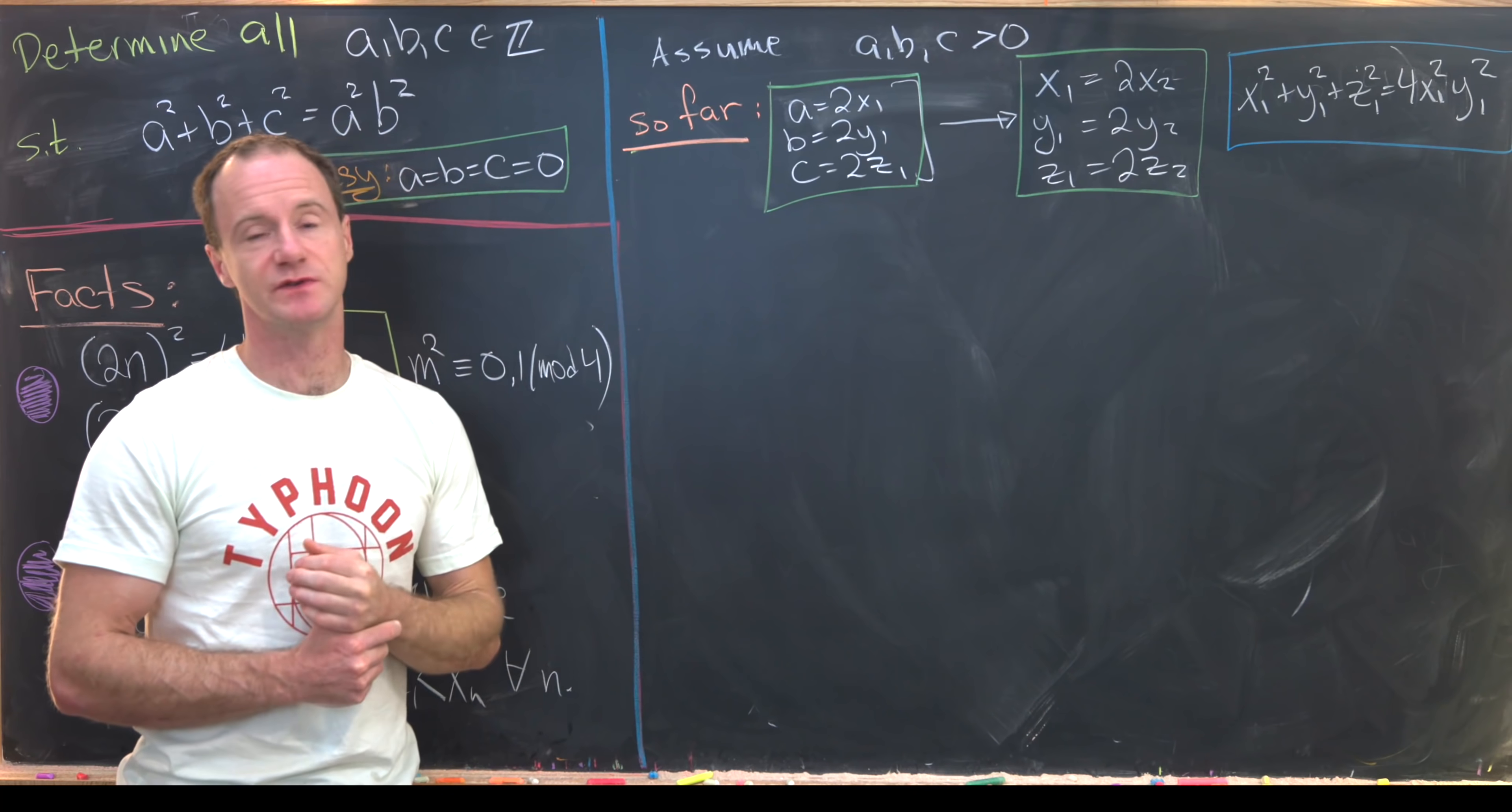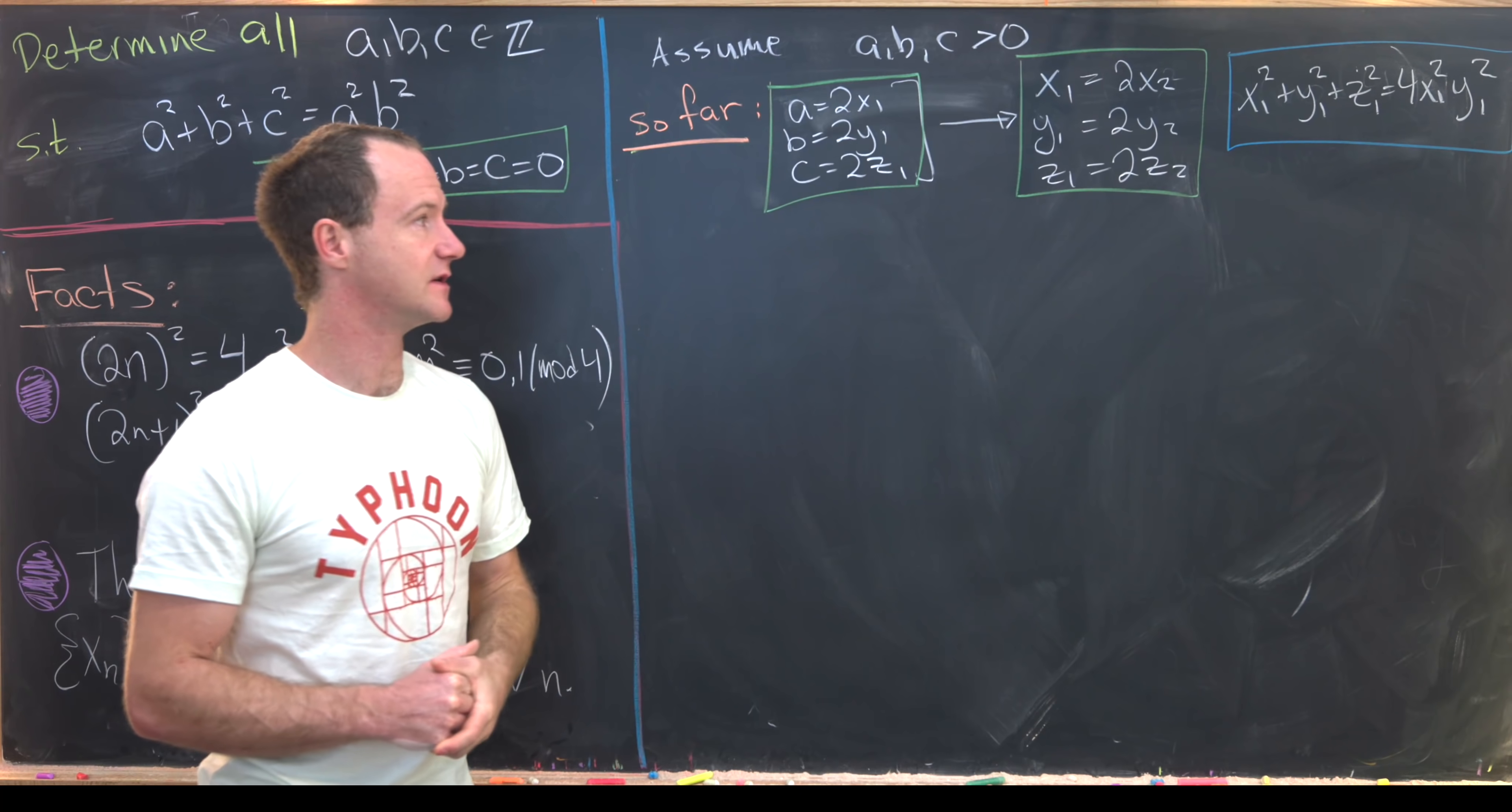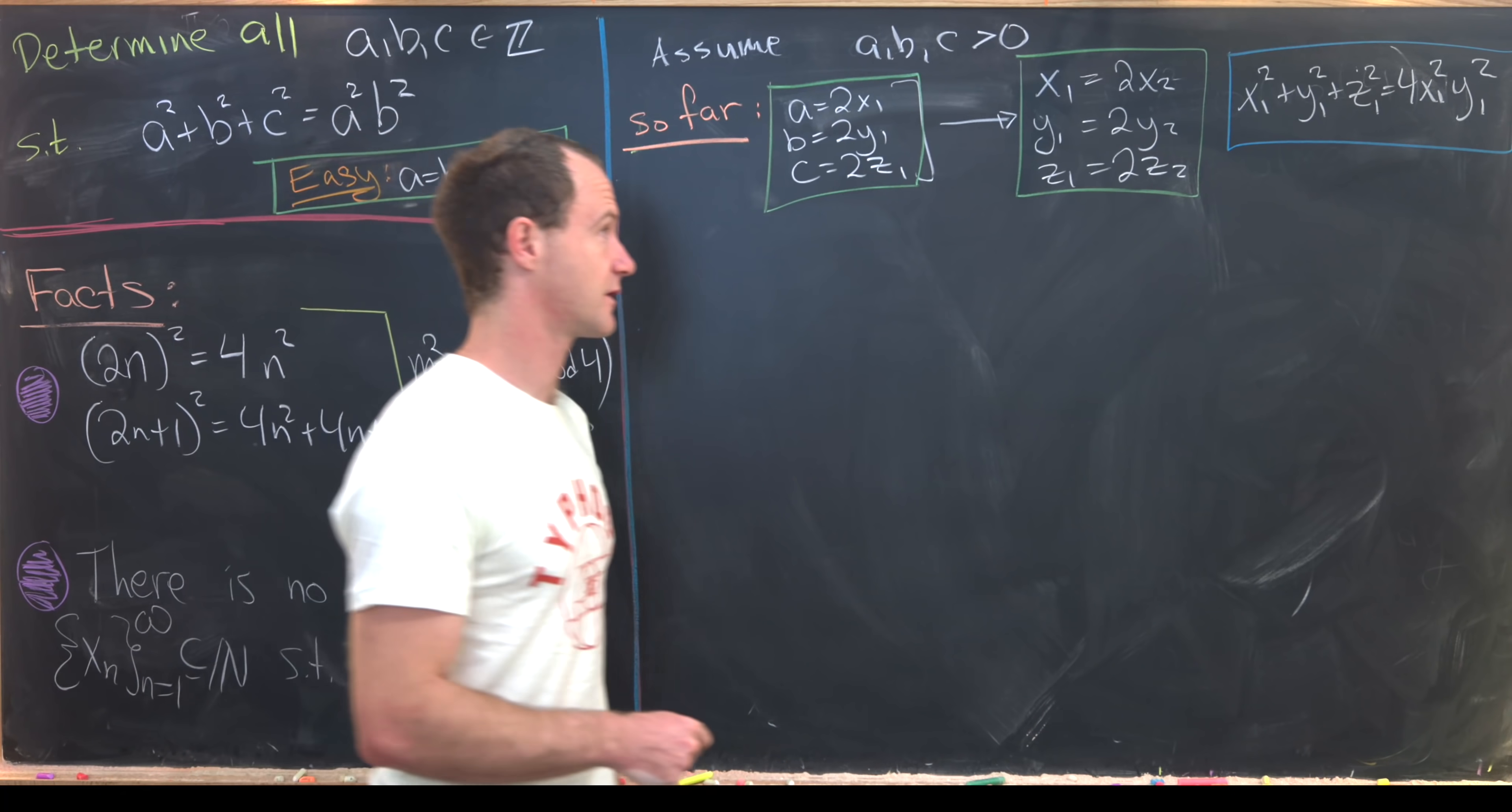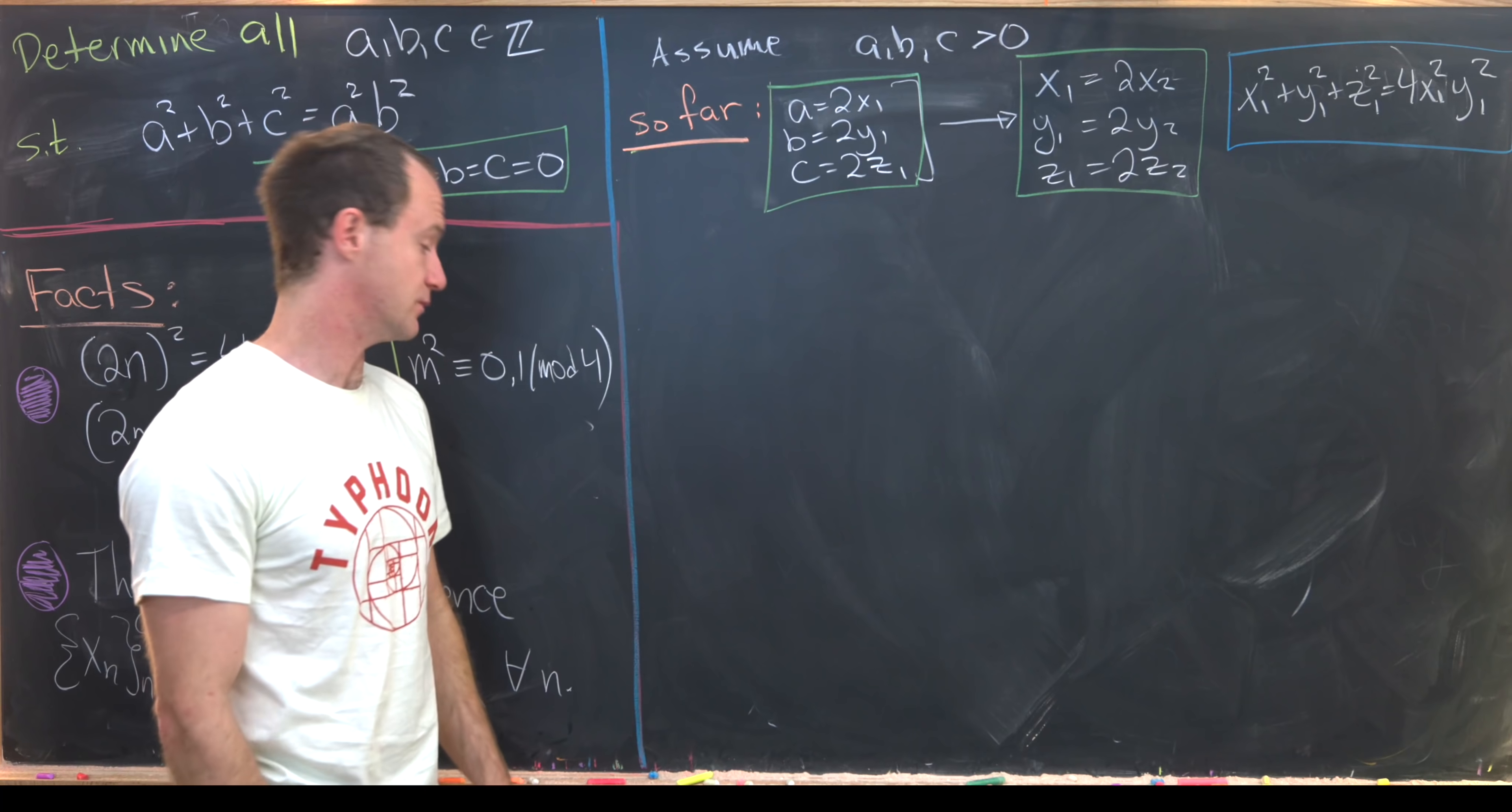So that means a = 2x₁, b = 2y₁, and c = 2z₁. Then we showed that x₁, y₁, and z₁ also had to be even. So x₁ = 2x₂, and so on and so forth. Furthermore, x₁, y₁, and z₁ satisfied that equation which is in blue.